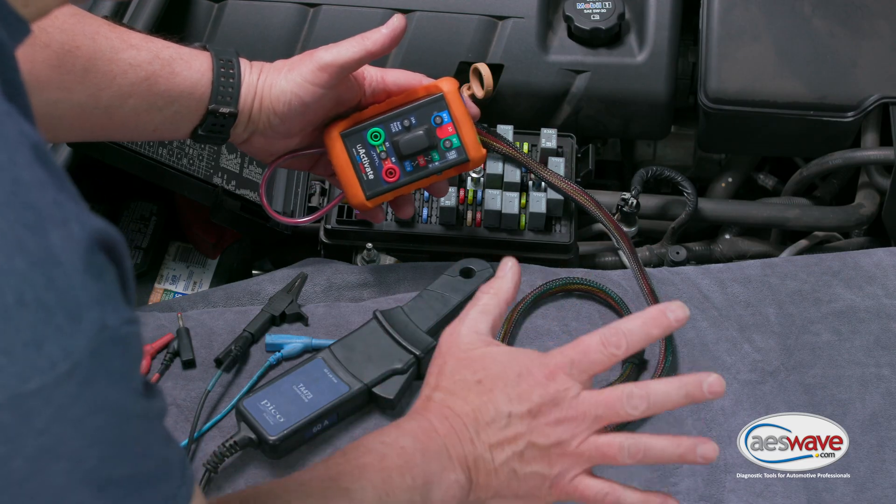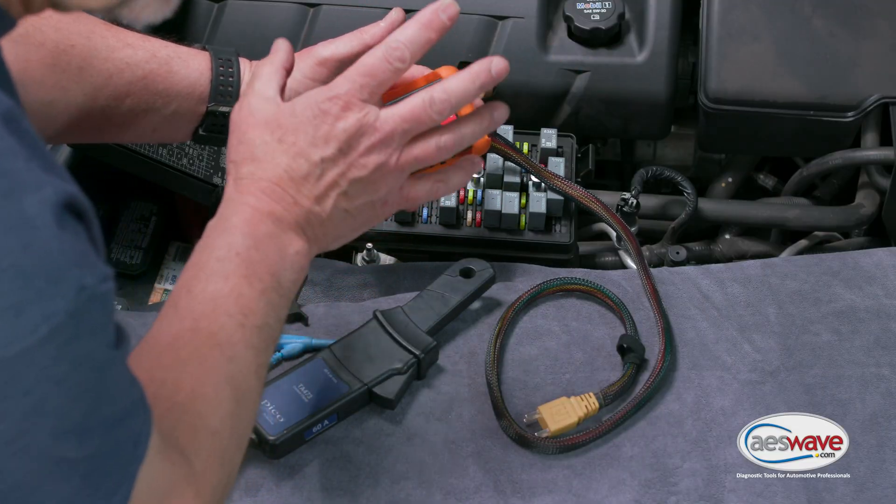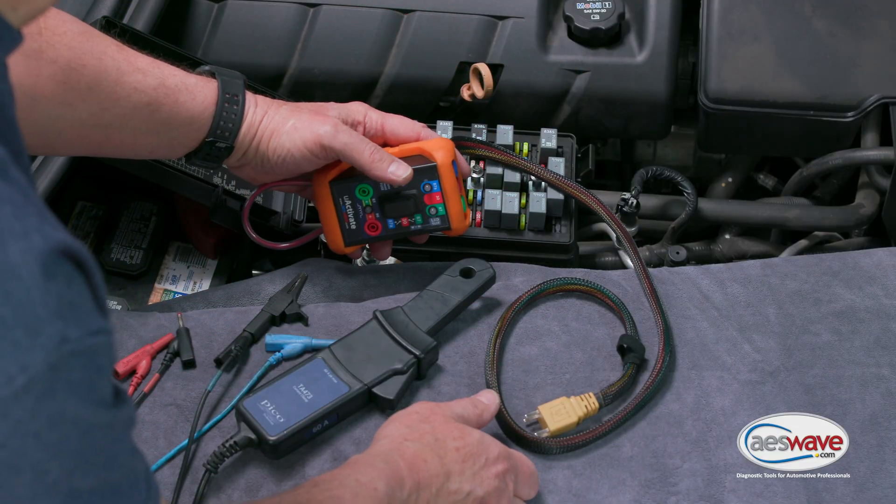To start, we'll be measuring the voltage on the green test port on the Uactivate, which is pin 87 of the relay circuit on this 2011 Chevrolet Corvette.